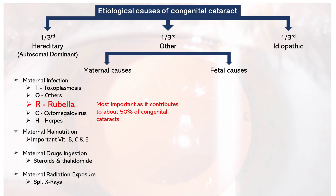Fetal causes can be remembered by the mnemonic A, B, C, D. A stands for anoxia or hypoxia, which is deficiency of oxygen. As we have seen in lens physiology, in the absence or deficiency of oxygen, anaerobic metabolism takes place, which is responsible for the formation of free radicals. Free radicals lead to aging, and aging is a major factor for causing cataract. This is how anoxia or hypoxia can cause cataract.